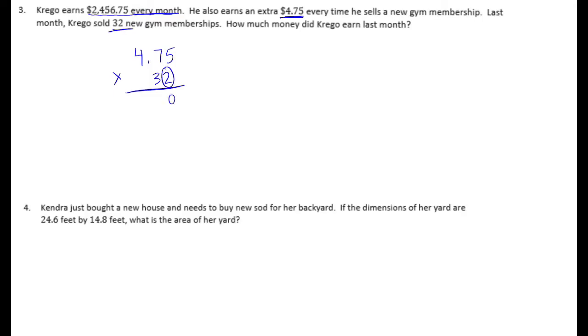Start with 2. 2 times 5 is 10, carry the 1. 2 times 7 is 14 plus 1 is 15. Carry the 1. 2 times 4 is 8 plus 1 is 9. Put my 0 down. On to the 3. 3 times 5 is 15, carry the 1. 3 times 7 is 21 plus 1 is 22. Carry the 2. 3 times 4 is 12 plus 2 is 14. Now we add them together. We had 1, 2 digits behind the decimal point. He made an extra $152 selling memberships.